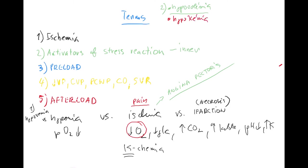And the third one: hypoglycemia — very good. Remember when you're in hypoglycemia you'll see the stress response trigger: you'll be sweating and pale like a wall. So these three — hypovolemia, hypoxia, hypoglycemia — will always trigger the stress reaction.